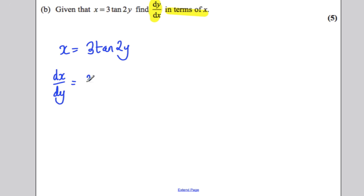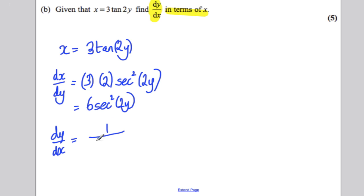So the 3 still remains there. A lot of people just forget the 3. Now this is the chain rule. Differentiate inside the tan and you get 2. Differentiate tan, you get sec squared, and keep that evaluated at what was originally inside the brackets. So this would be 6 sec squared of 2y. So therefore, dy by dx is 1 over 6 sec squared 2y.